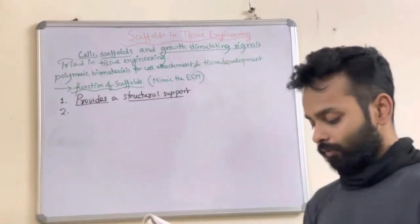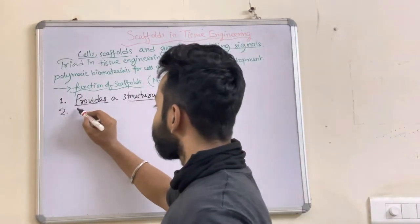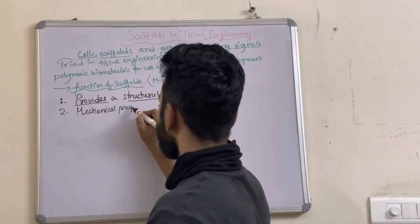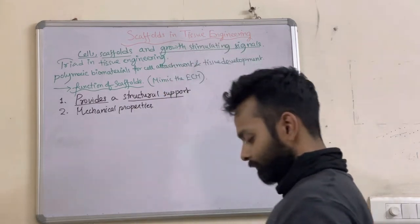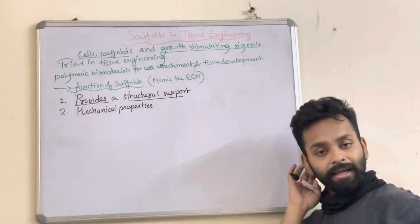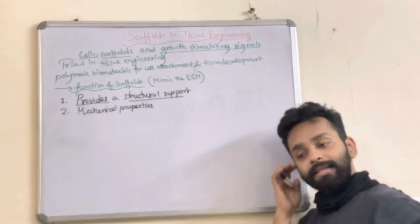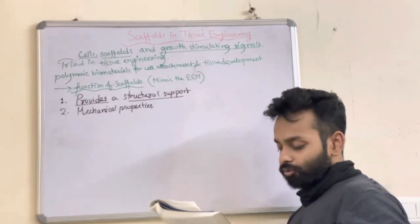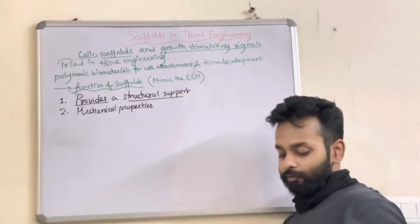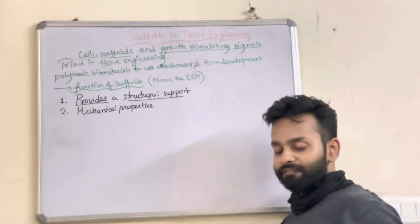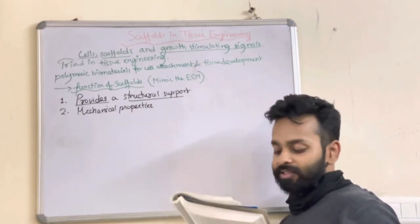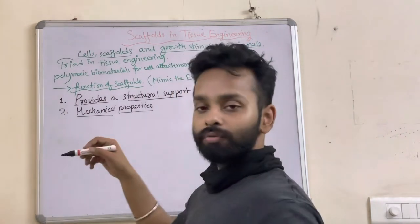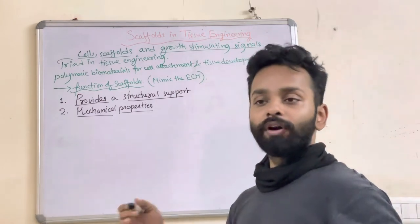The second important function is to contribute to the mechanical properties — scaffolds will mimic the mechanical properties of the tissue in which they are being applied, providing shape and mechanical stability to the tissue defect where they are used, and also giving rigidity and stiffness to the engineered tissue.